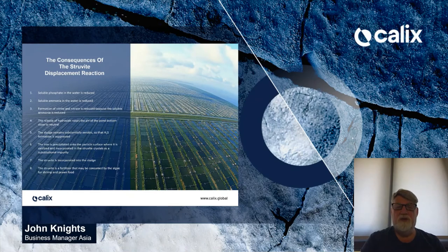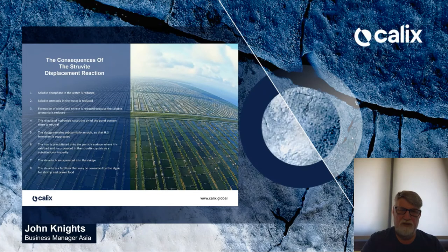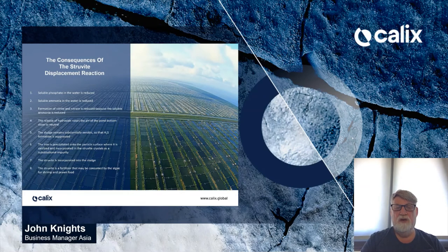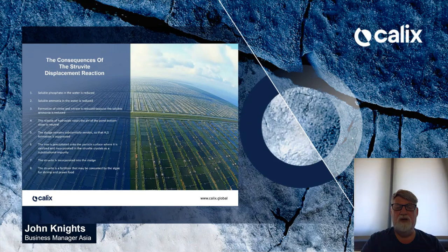The consequences of the struvite displacement reaction: soluble phosphate in the water is reduced; soluble ammonia in the water is reduced; formation of nitrite is reduced. Release of hydroxide raises the pH of the pond bottom close to neutral, suppressing the expression of viruses and disease. The sludge remains substantially aerobic, so hydrogen sulfide formation is suppressed. If iron is present, it is precipitated on the particle surface of the active magnesium hydroxide, where it is oxidized and incorporated in the struvite crystals. The struvite is incorporated in the sludge and acts as a fertilizer that may be consumed by algae for shrimp and prawn feed.